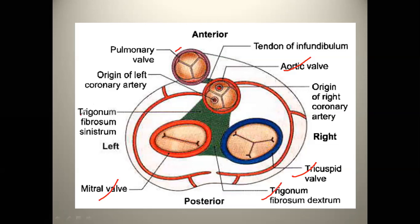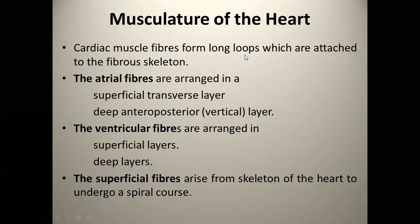Next है Trigonum Fibrosum Sinistrum. Trigonum Fibrosum Sinistrum छोटा mass होता है, जो Aortic और Mitral के बीच में है. Cardiac muscle fibers form long loops which are attached to the fibrous skeleton. Cardiac muscles एक long loop का निर्माण करते हैं, which are attached to the fibrous skeleton.